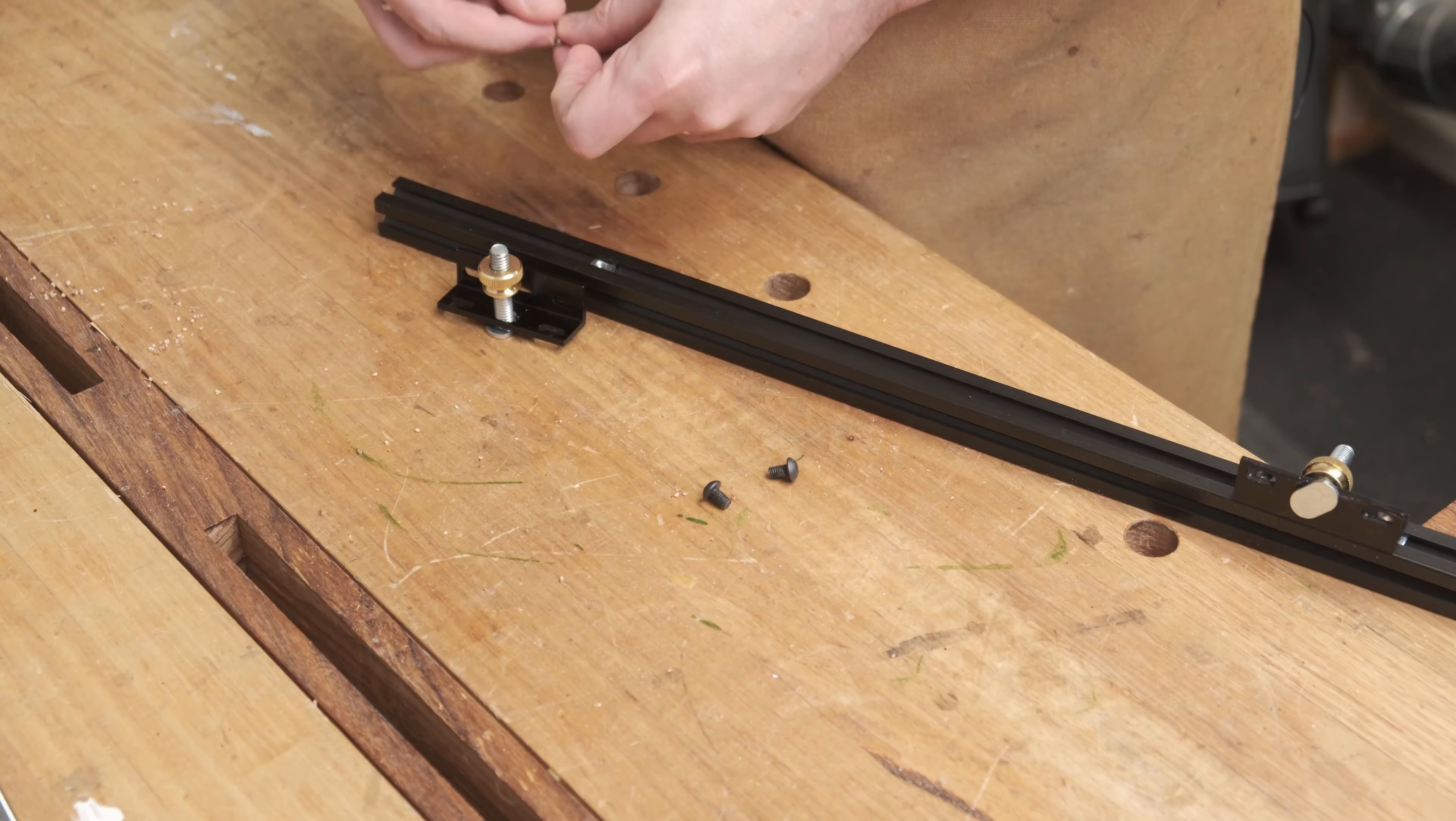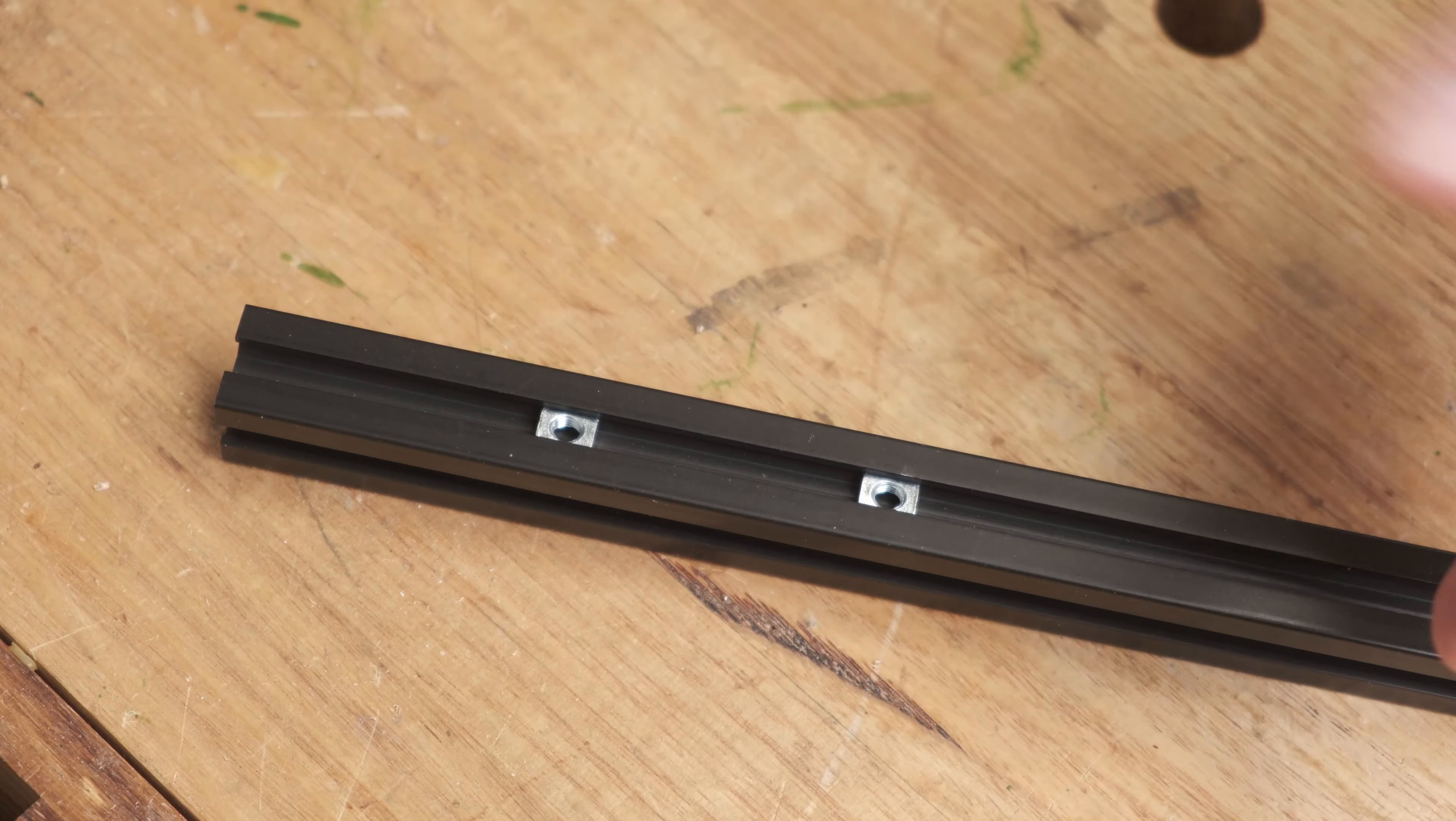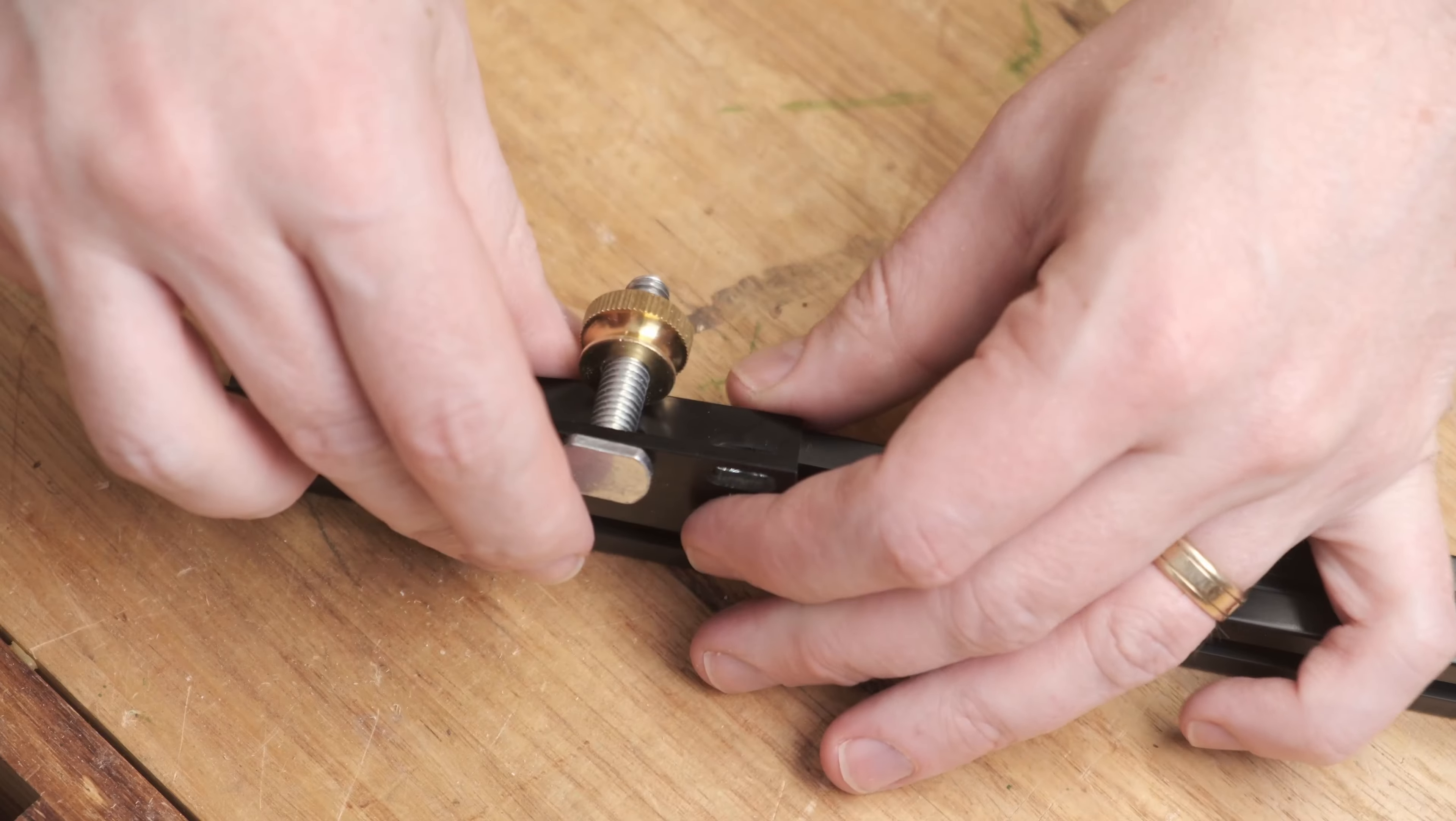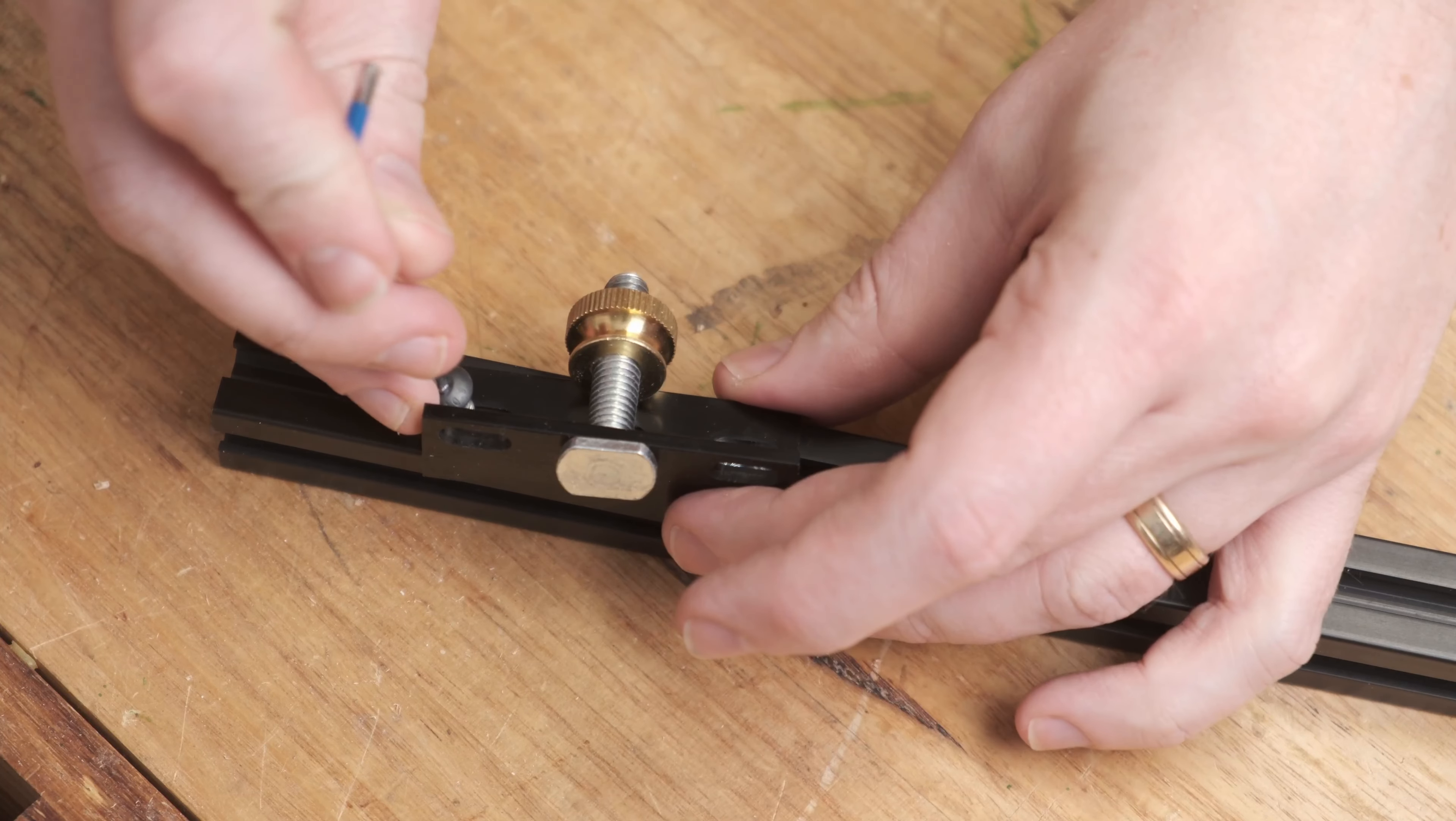So to attach the bracket to the fence and the aluminum extrusion I've got two insert nuts here. The bracket will go like so and then that just locks down with some M5 hardware.